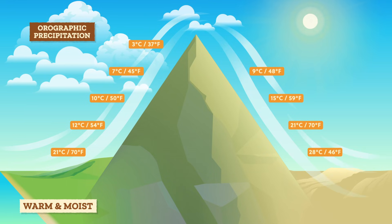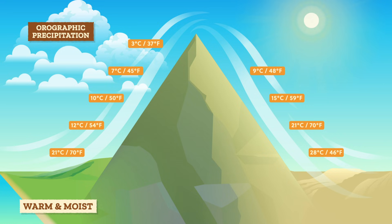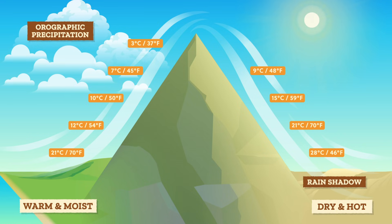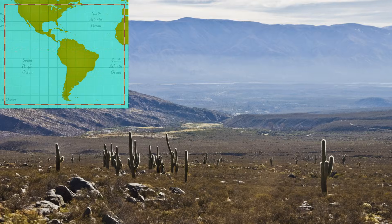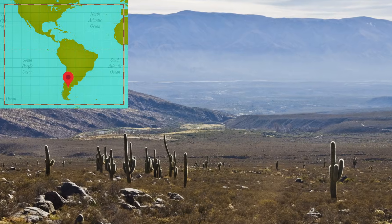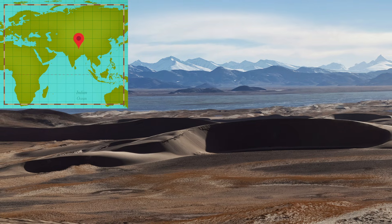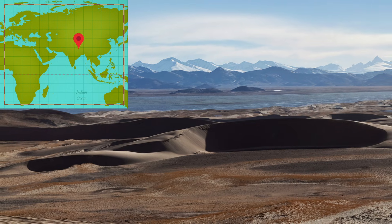Then as the air descends the other side of the mountains, it gets warmer as the air molecules are compressed together and any leftover water droplets evaporate. So we say the side of the mountains not facing the winds, like where the Great Plains are, is in a warm, dry area called the rain shadow of the Rocky Mountains. Orographic precipitation patterns can be found on mountains worldwide — in Argentina, the Patagonia Desert lies in the rain shadow of the Andes Mountains, while the trans-Himalayan region of Tibet and Central Asia lies in the rain shadow of the Himalaya Mountains.